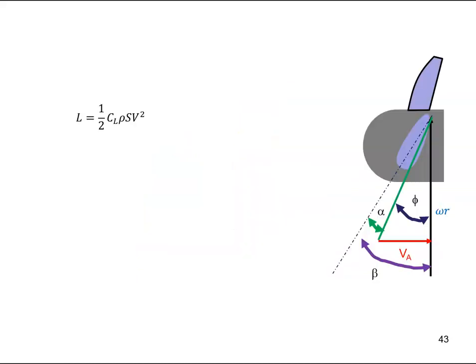Let's have a look at that. Here is my high speed propeller and it is rotating around and this is the side view of it. And we know that for any airfoil section the lift is half times the coefficient of lift rho s v squared.